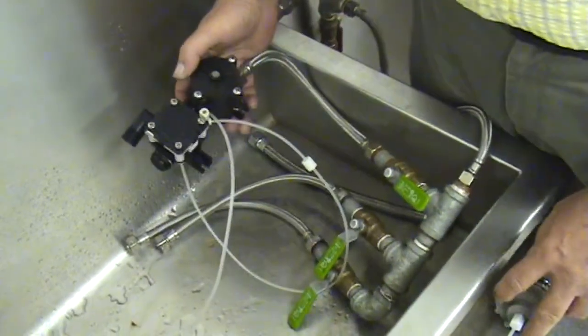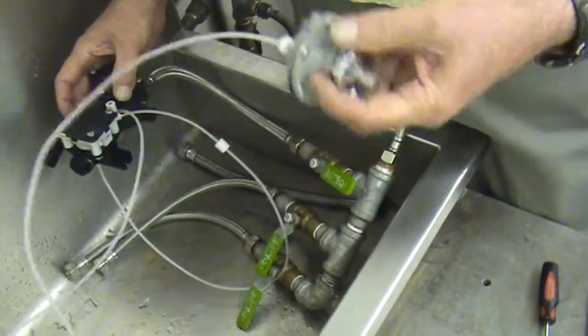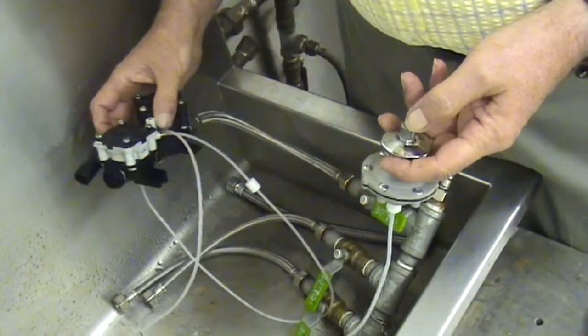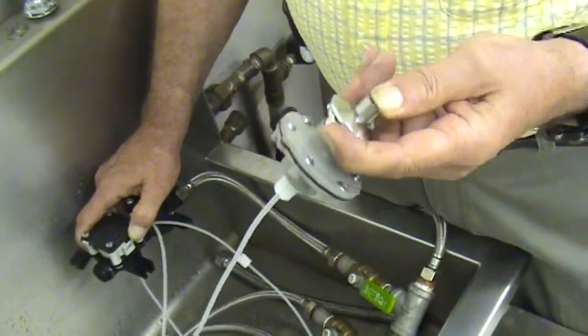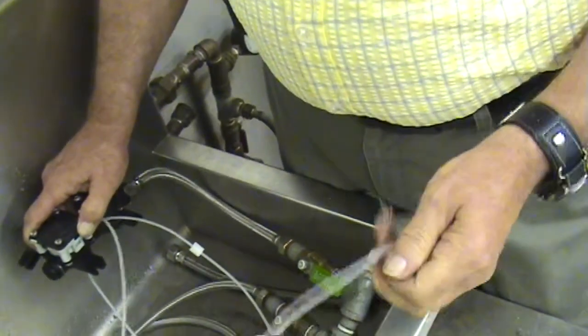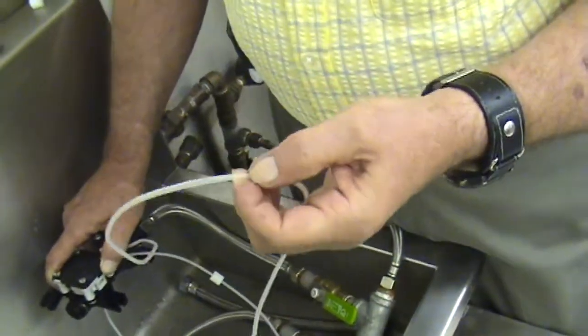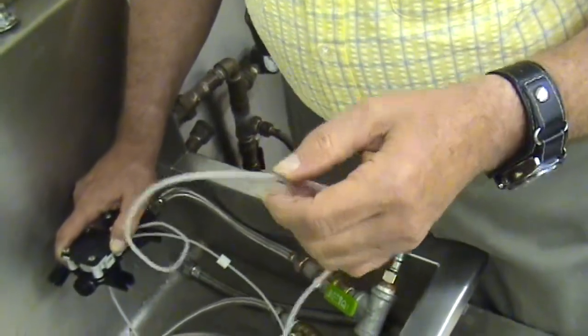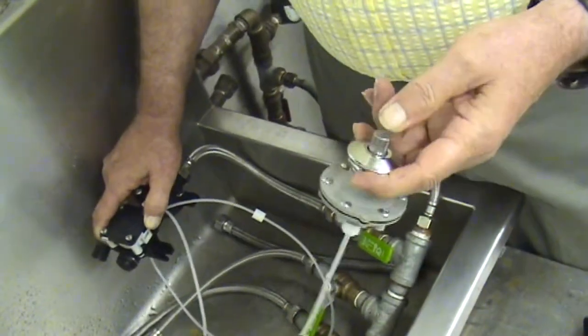Now sometimes you'll get into a situation where you have a push button that's kind of spongy and hard to push. If that's the case, you want to check your tubing. Make sure that your tubing is not kinked or pinched shut because a spongy button is an indication of that problem.